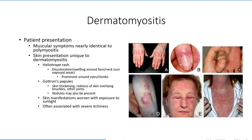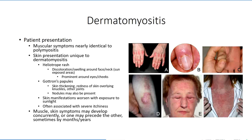Another common skin manifestation is Gottron papules, which describes a thickening and redness of skin over the knuckles and other joints of the body, which may or may not include nodules. While the presence of these characteristic dermatological findings along with the muscular findings can assist with the diagnosis, it is complicated by the fact that the two patterns may not necessarily present together. Either muscle weakness or dermatological findings may present first and sometimes precede the other by months or even years. In instances where weakness appears first, it may be mistaken for polymyositis.